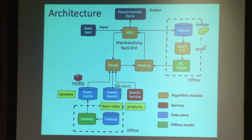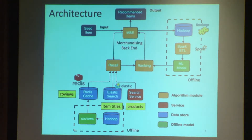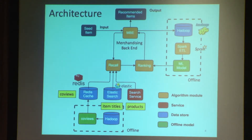This is a diagram of our architecture. The input is the seed item — the item you're looking at on the item page — and the output is the recommended items we serve. It goes into our merchandising backend platform. We have two steps similar to a search paradigm: a recall stage and a ranking stage. We can't rank 800 million items at runtime, so we break it up. For recall, we have several sources of items that are similar to the original seed item.